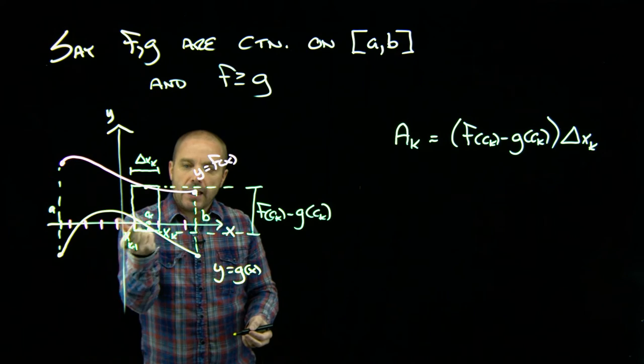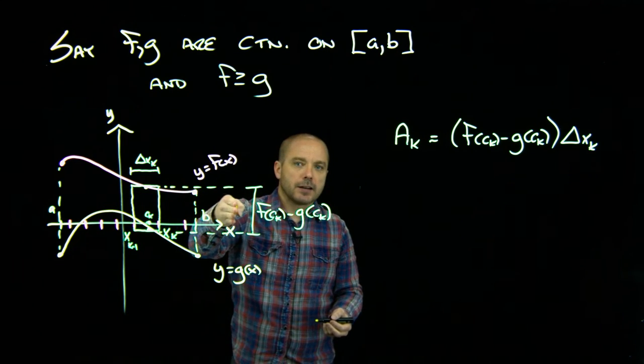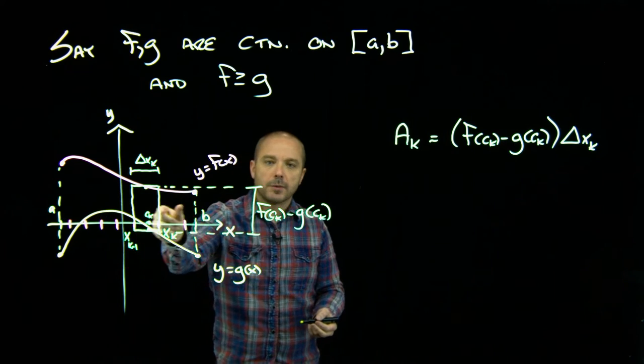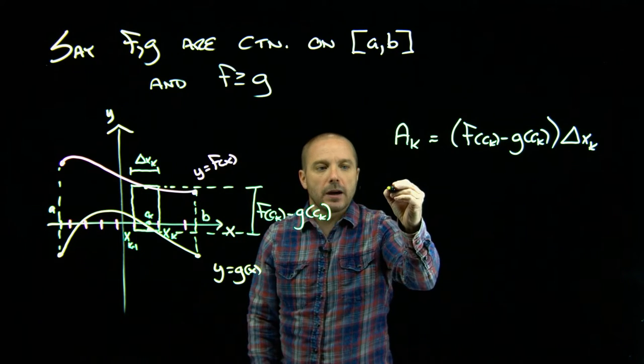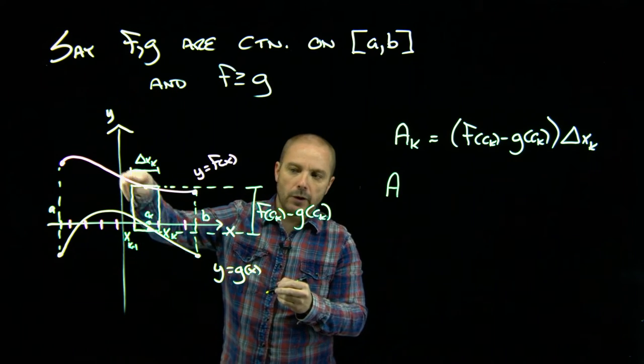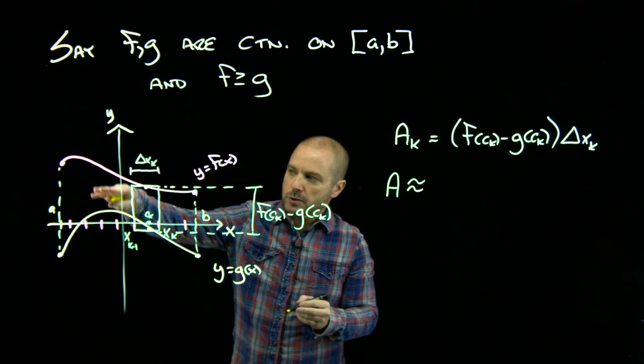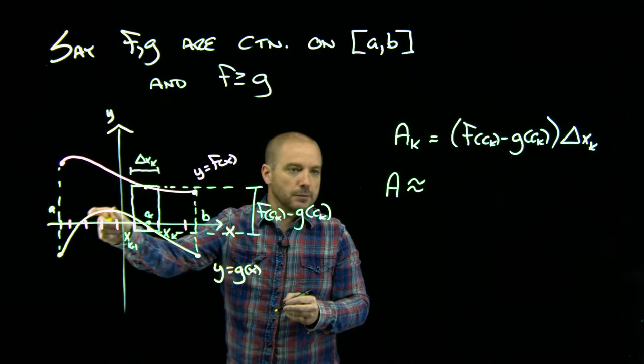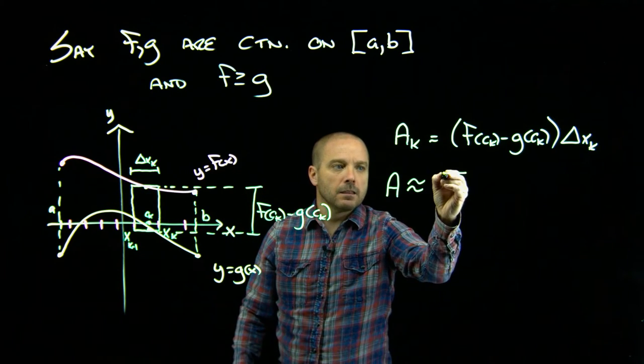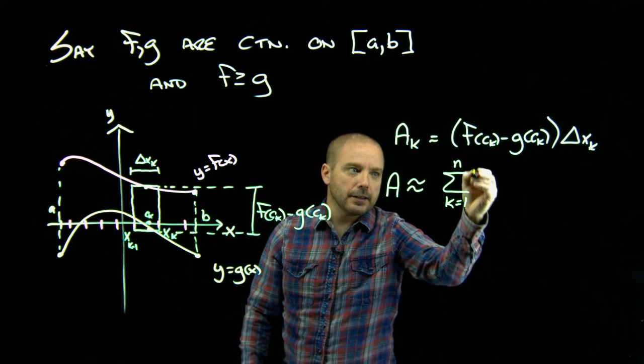Now, we would have n of these rectangles here. So if we add up those n rectangles over those n subintervals, we would get an approximation for our total area. Remember, we're interested in the area between these curves. So the area between the curves is approximately the sum of our n rectangles.